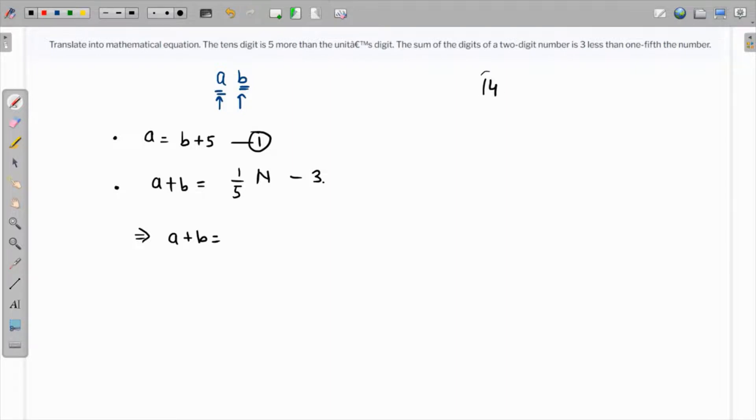If 14 is a number, then we have to represent this—we can represent this as 10 times 1 plus 4. That's how we represent it.